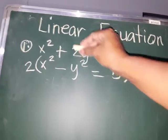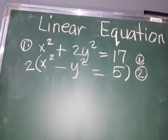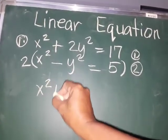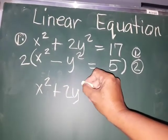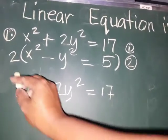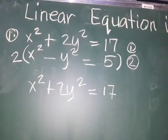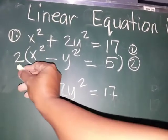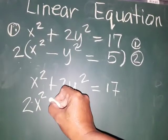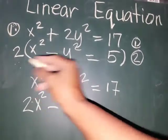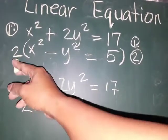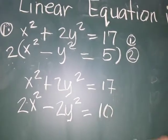Why positive 2? Because this term is already positive and negative. So next, we're going to copy equation 1: x squared plus 2y squared is equal to 17. Next, multiply 2 in our second equation to eliminate y. So we have 2 times x squared equals 2x squared, minus 2 times y squared is 2y squared, and 2 times 5 is equal to 10.